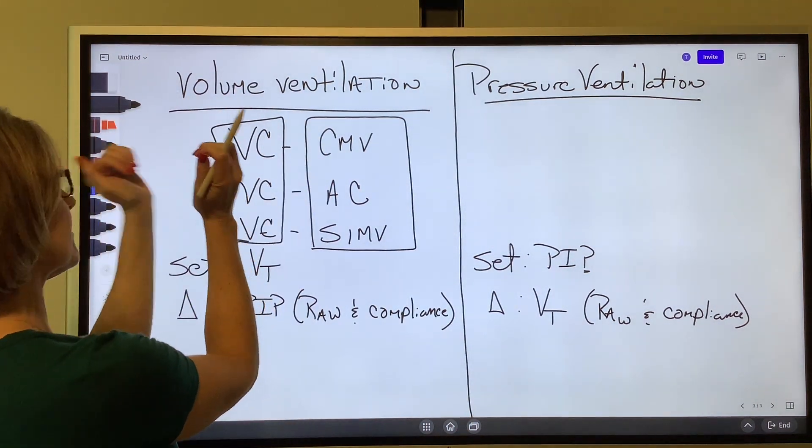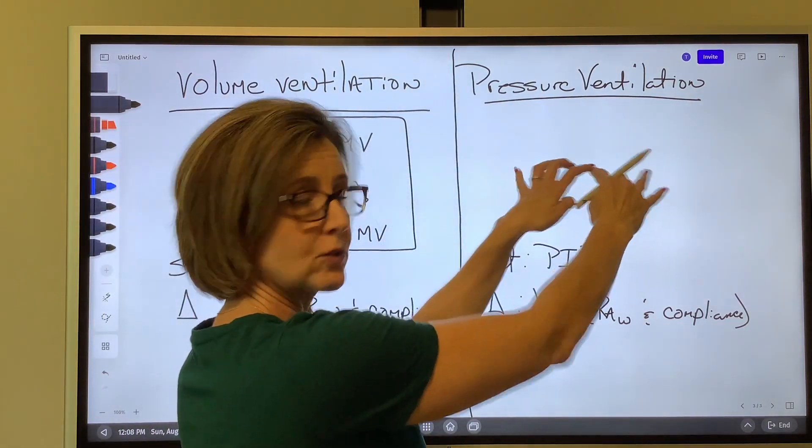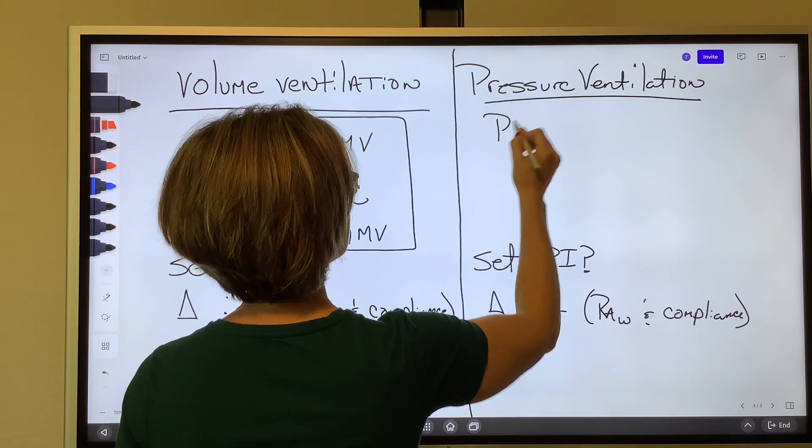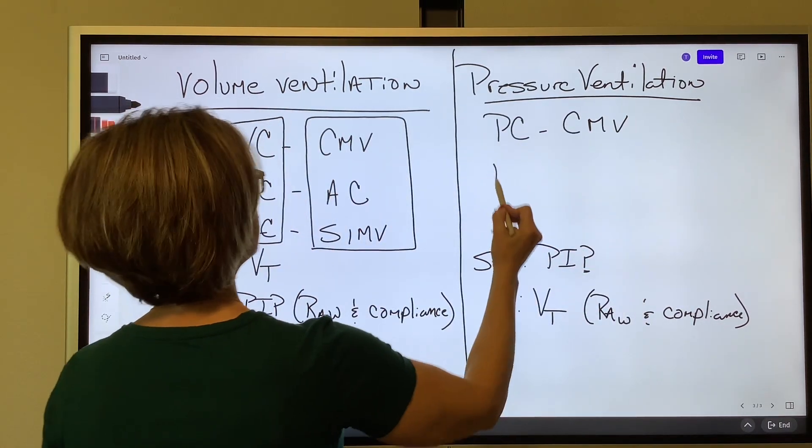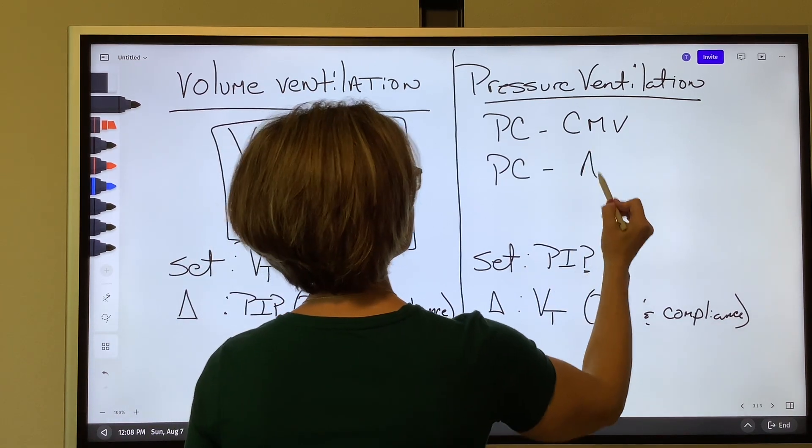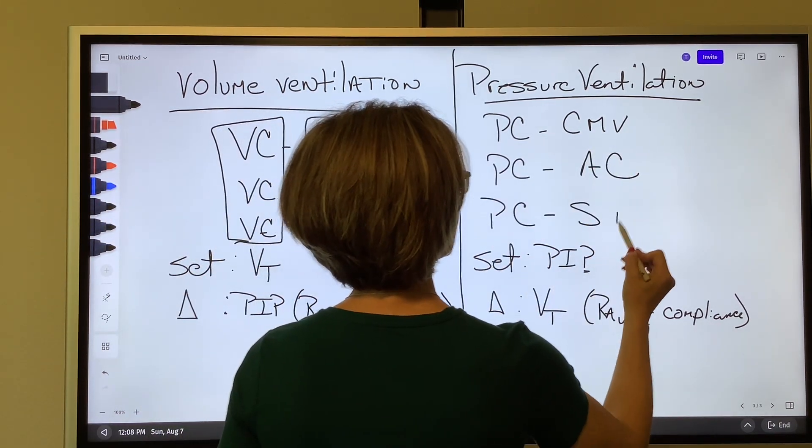All right. So we have, you know, when we say VC CMV, we have a mirror component in pressure ventilation. We have PC CMV, we have PC AC, and we have PC SIMV.